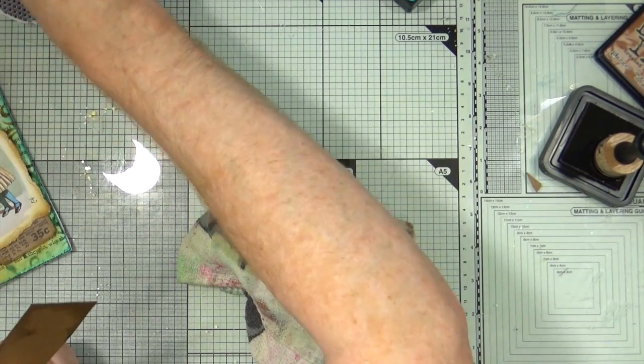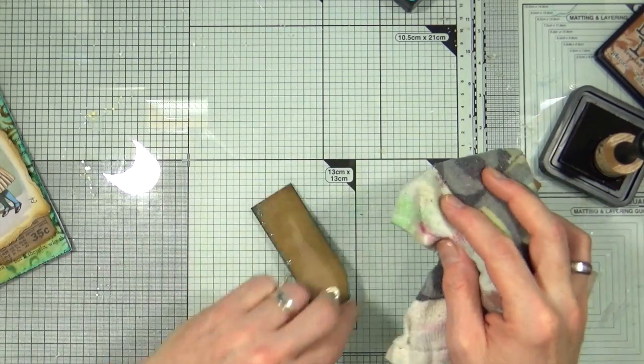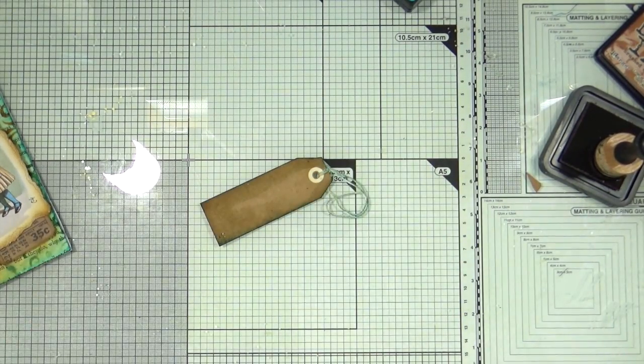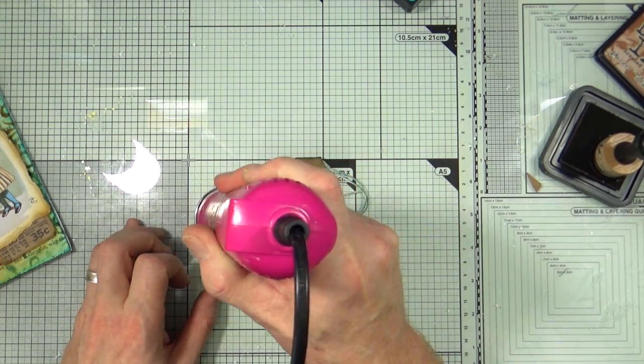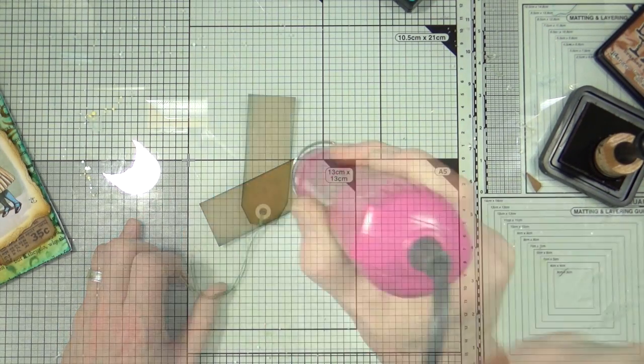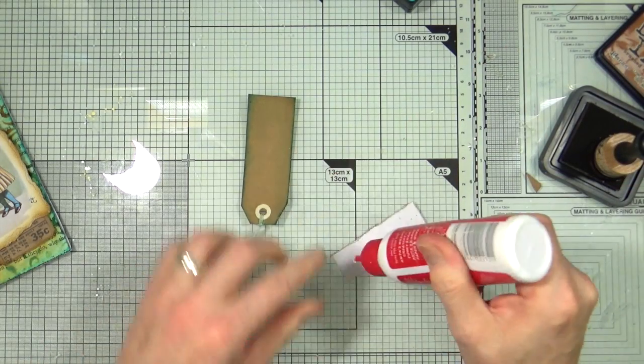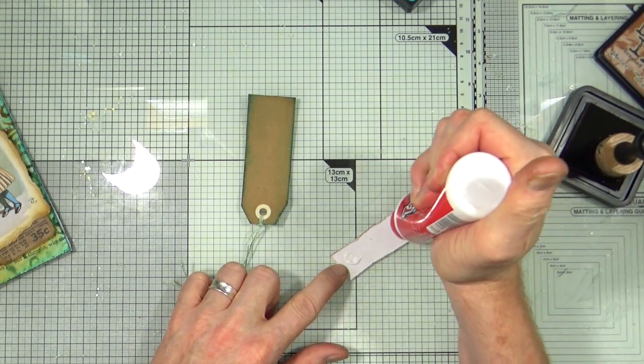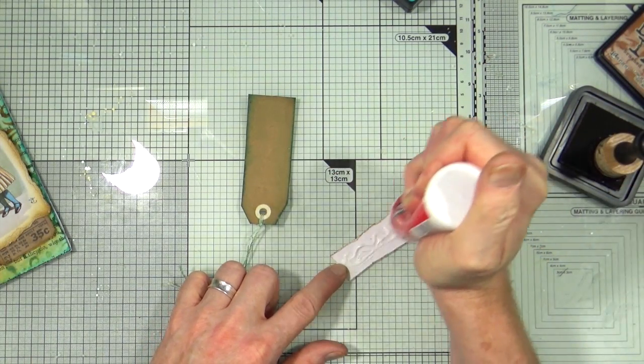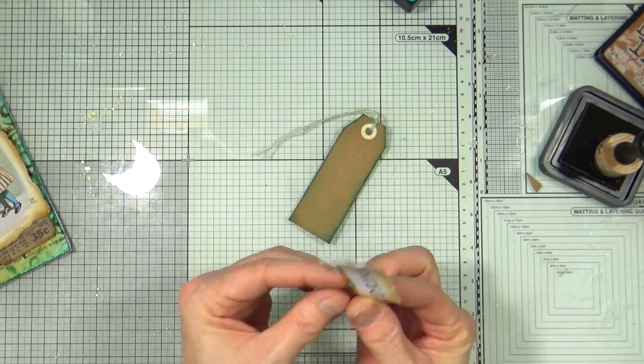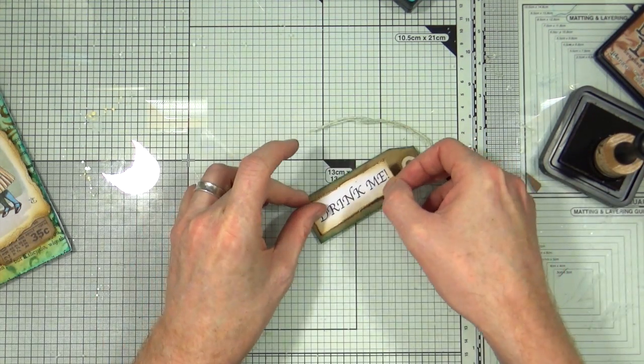Now that my mini tag is dry, I'm just going to glue my drink me title piece onto the mini tag that I've created now, and then that will be ready for adding to the main tag itself.